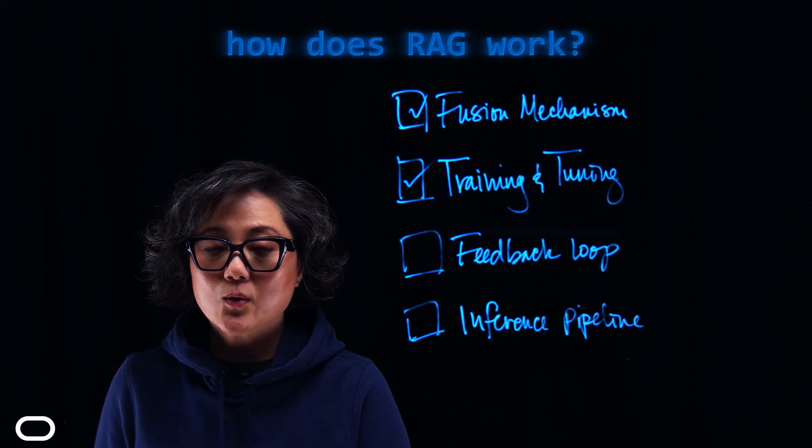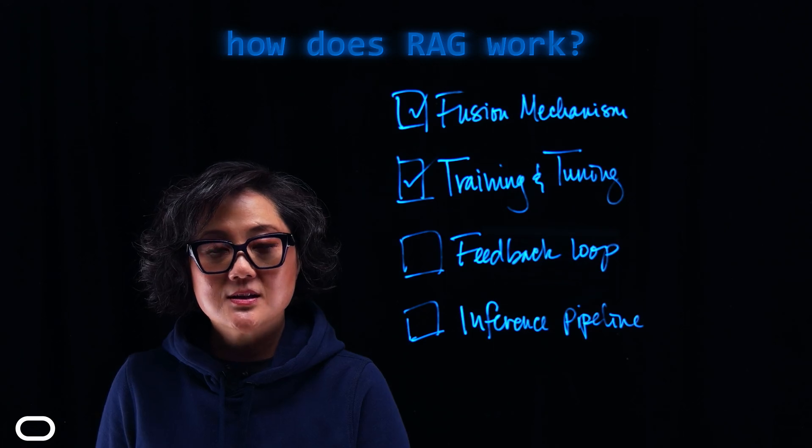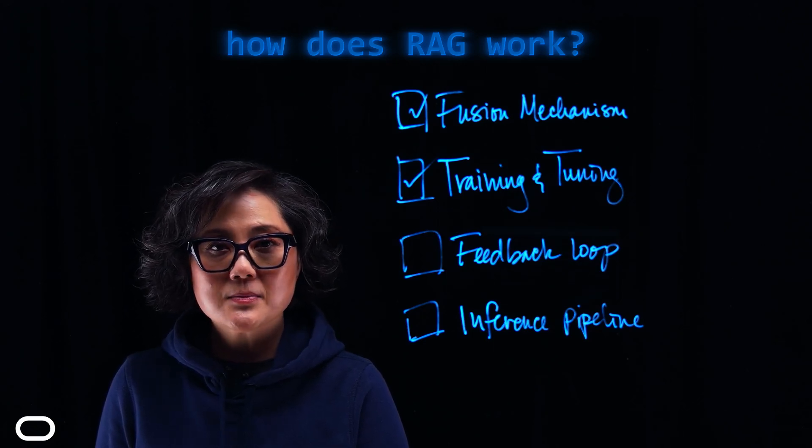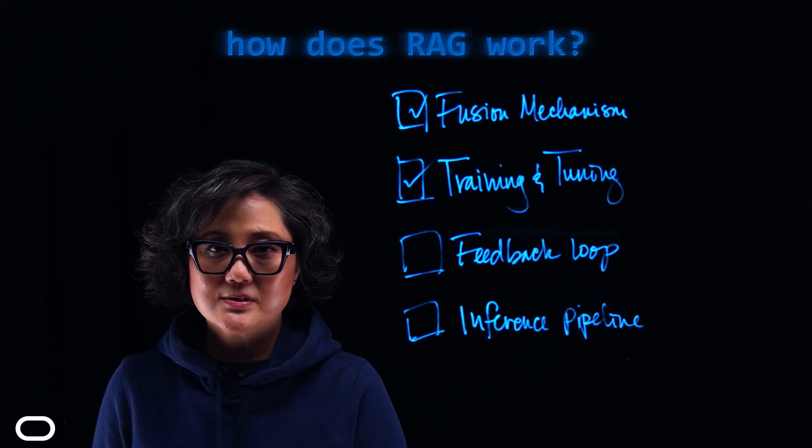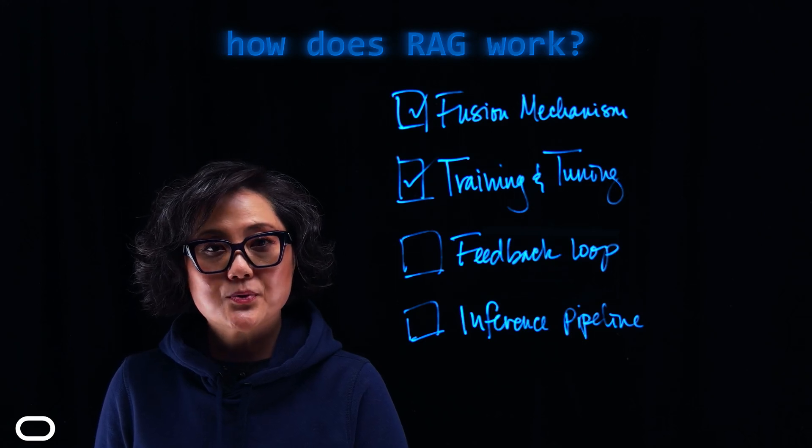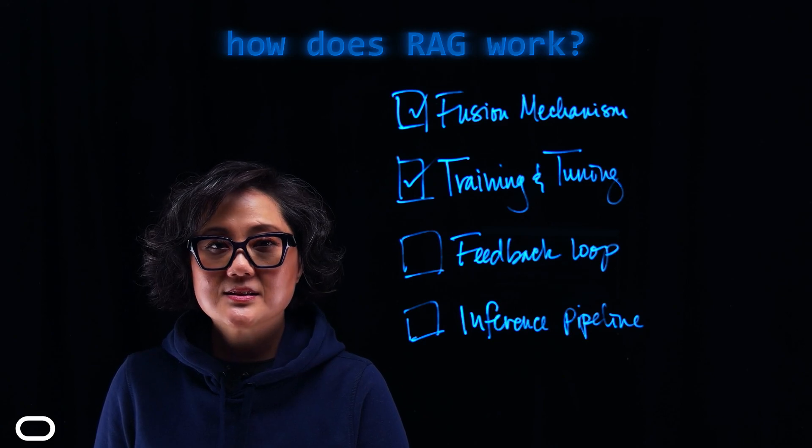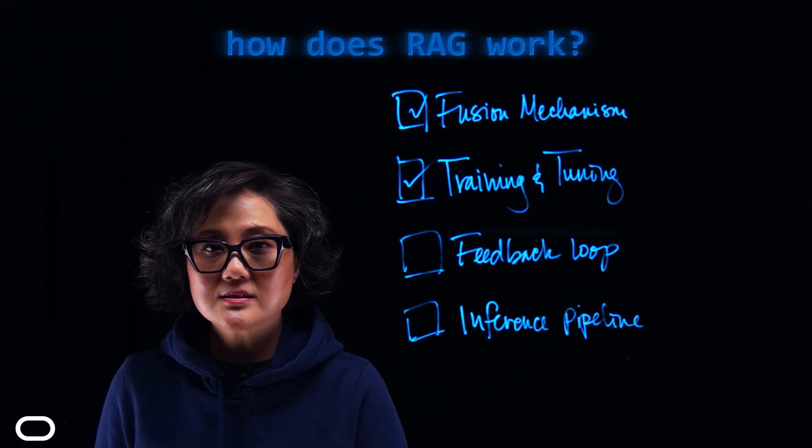During training and tuning, we look for mathematical functions to represent errors called loss functions. And the goal is to minimize errors during training so we can optimize results. Loss functions improve the retrieval accuracy and generation quality. And these could include contrastive loss for retrieval, which are representations where similar data points are closer together in the embedding space.